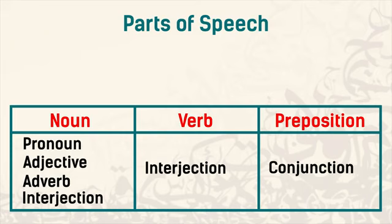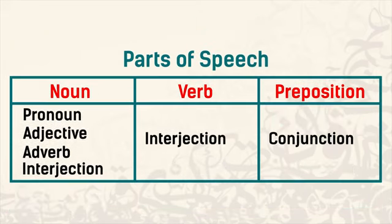Here is the final picture of Arabic parts of speech: noun, verb, and preposition. Let's now talk about each one of them separately.